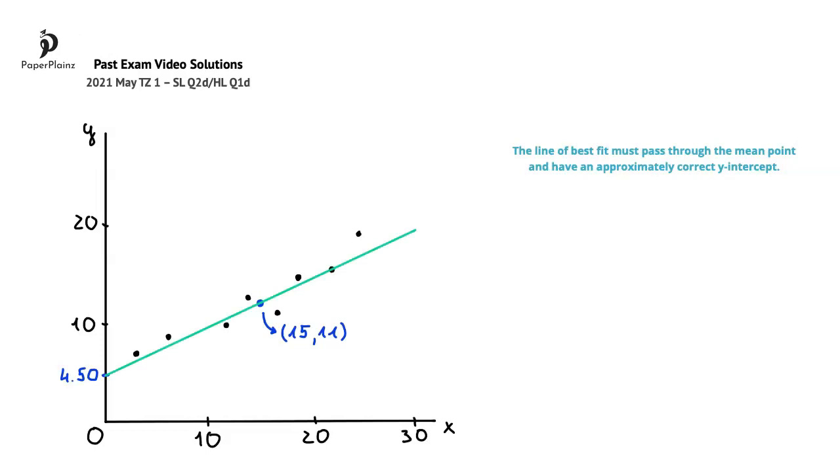An important exam-taking tip to take away from here is for you to make sure that you use a ruler when drawing straight lines on diagrams. This might seem like an obvious tip, but I thought I would mention it here because students often lose marks for not using a ruler when drawing straight lines.